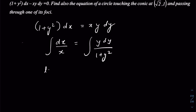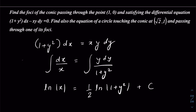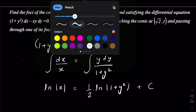After integration, the left-hand side becomes ln|x|, whereas the right-hand side becomes ½ ln|1 + y²|. Of course, we must include a constant of integration after performing the integration on both sides. To find this constant, we use the fact that the conic passes through (1, 0).